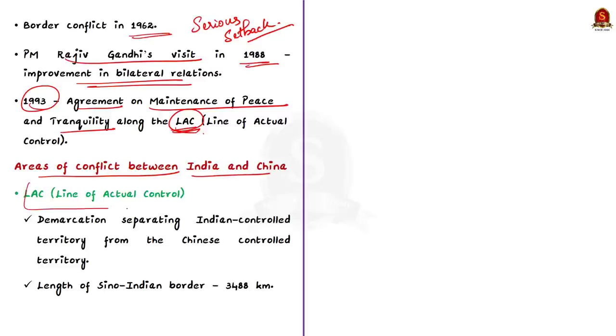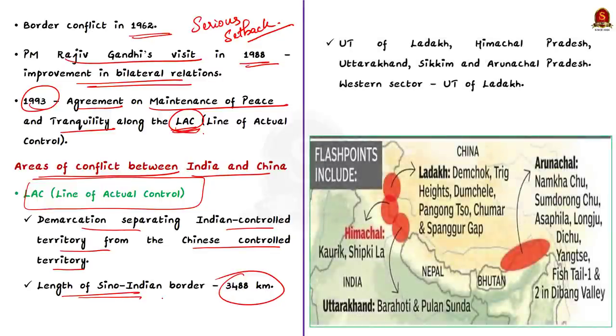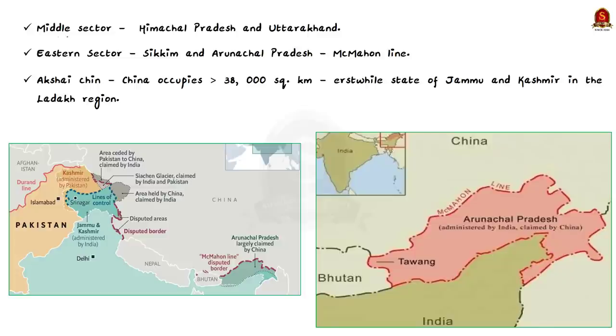Now, let us see the areas of conflict between India and China. LAC is the demarcation that separates India-controlled territory from the Chinese-controlled territory. Note that the length of Sino-Indian border is 3488 kilometers. The border traverses the Union territory of Ladakh, Himachal Pradesh, Uttarakhand, Sikkim, and Arunachal Pradesh. The LAC, in its wider sense, is the effective border between India and China. It covers the western sector which include Union territory of Ladakh, the middle sector which includes Himachal Pradesh and Uttarakhand. It also covers the McMahon line in the east which covers Sikkim and Arunachal Pradesh.